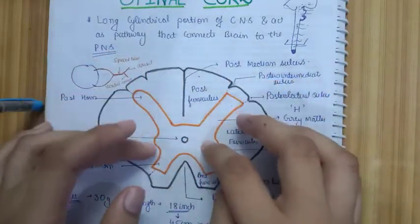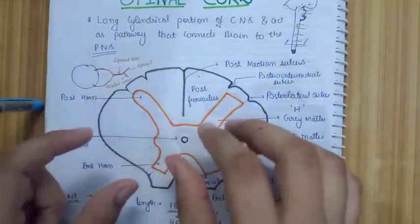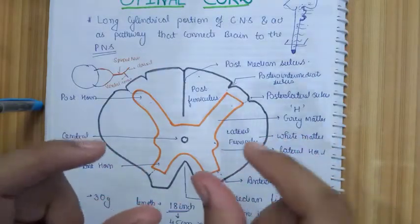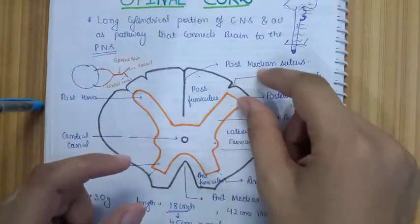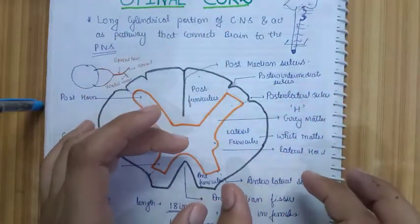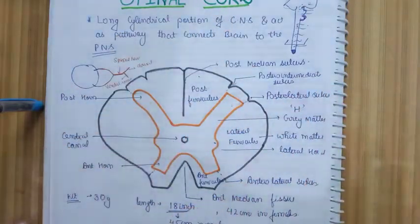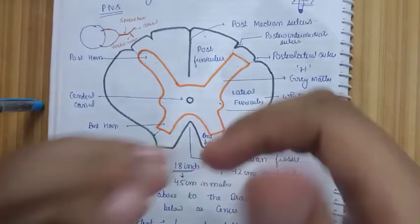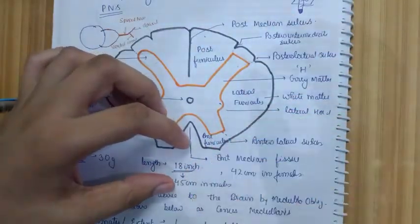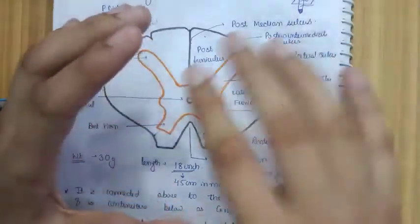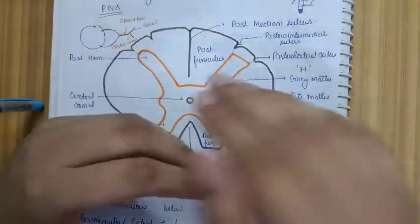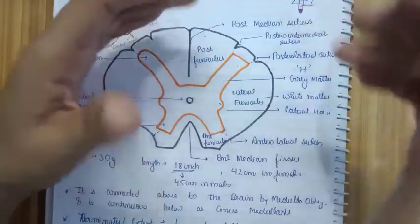The gray matter is H-shaped and in the center we have a central canal. The ventral and dorsal rootlets arise from the anterolateral sulcus. The weight of the spinal cord is around 30 grams and the length is around 18 inches. It terminates at the level of L1 in adults and L3 in children.